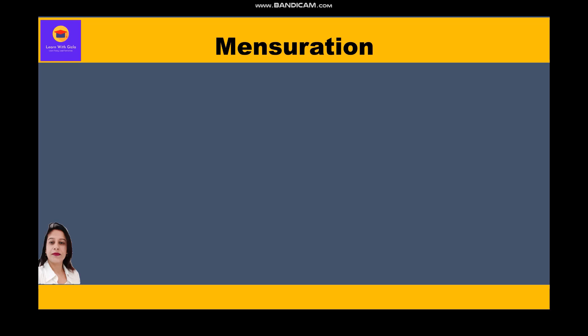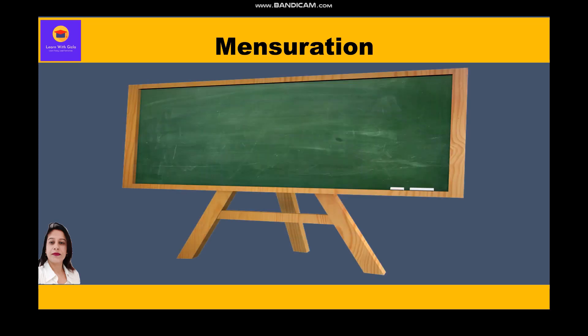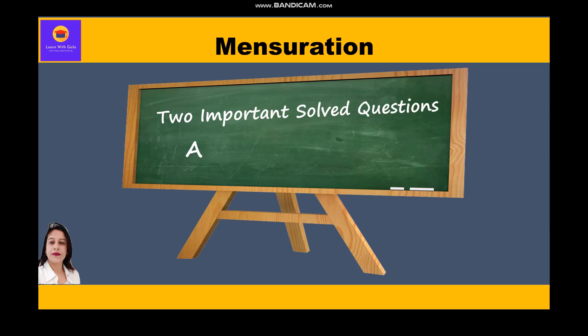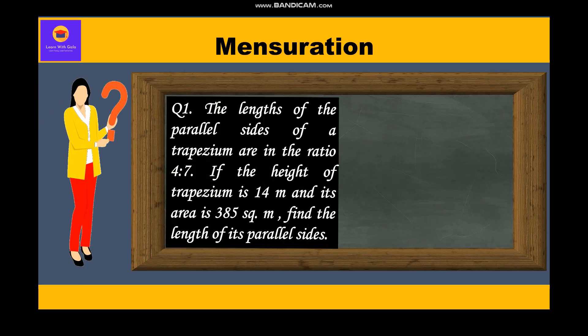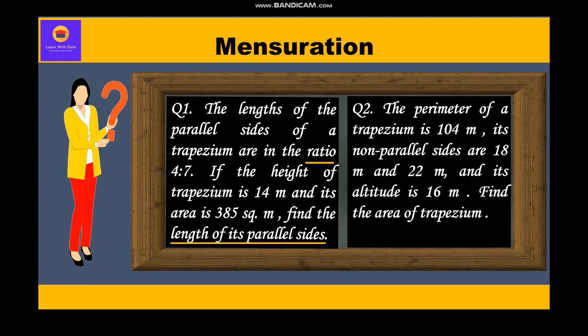Hello everyone, in this video on mensuration, we are going to take up two very important questions related to area of trapezium. In the first question, we need to find the length of two parallel sides whose ratio is given to us, whereas in the second question, we are given the perimeter of trapezium and we have to find its area. So let's start with the first question.